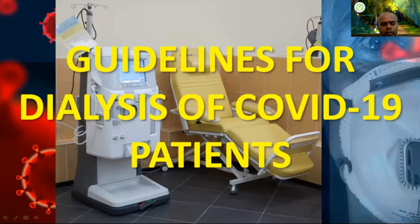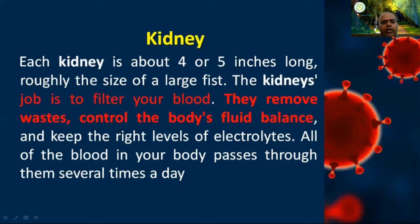A PPT has been prepared regarding that. First, what is the kidney? You know very well about kidney anatomy. The kidney is four to five inches long in size. The kidney's main job is to filter your blood, remove wastage, and maintain body fluid balance. This is the main work of the kidney — specifically, the electrolytes balance is maintained several times per day.